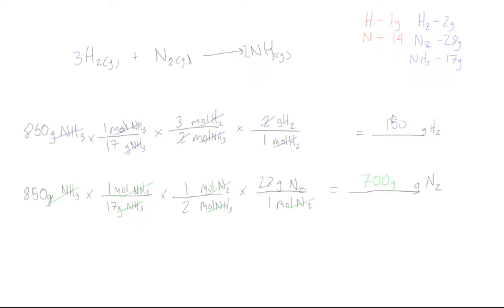So if we combine 150 grams of hydrogen gas with 700 grams of nitrogen gas, that gives us 850 grams of ammonia. This makes sense because these two reactants combined in their proper stoichiometric ratios — 3 to 1 in moles — yield 850 grams of ammonia product.